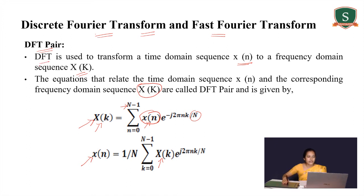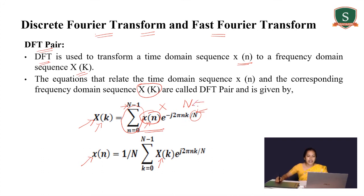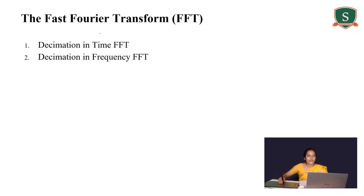Using DFT you can find N-point sequences, but if you observe the expression, we are performing multiplications and then adding those products. As the number of samples N increases, the number of products increases, which in turn increases the number of additions. So the complexity of multiplication and addition keeps on increasing as N increases, leading to increased hardware and computational complexity.